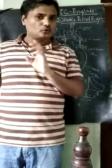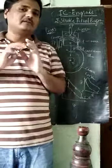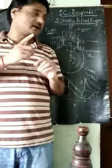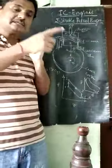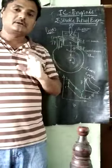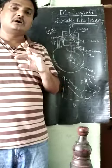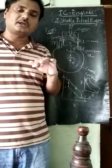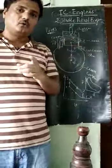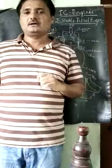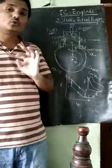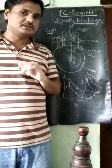To summarize the two-stroke engine: the design is different — instead of valves, ports are used. There is an additional transport port that transports the charge from the crankcase to the cylinder. The ports are controlled by covering and uncovering through piston movement, and all strokes are completed in only one revolution of the crank.